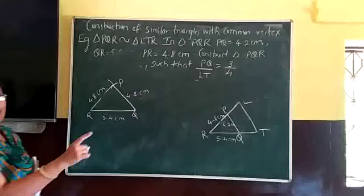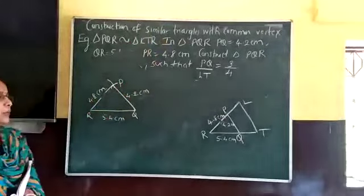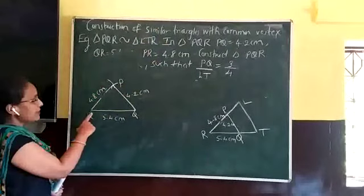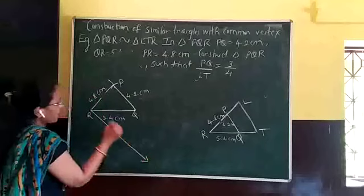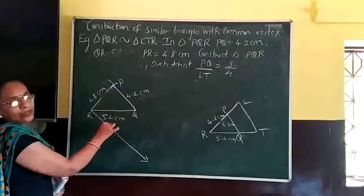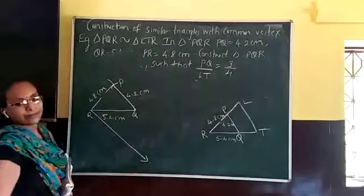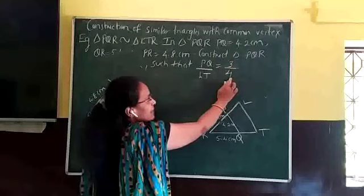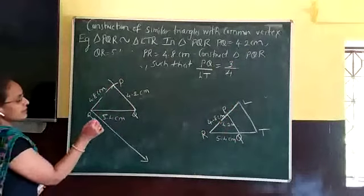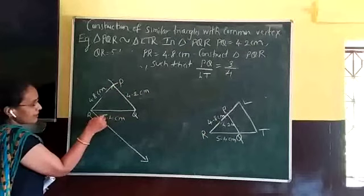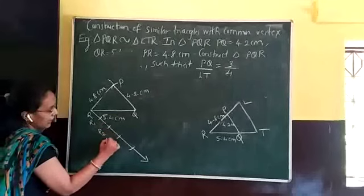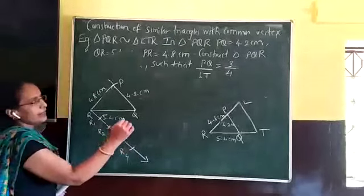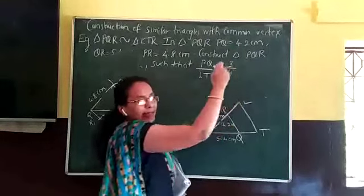After constructing triangle PQR, we are supposed to start constructing the second triangle. R is the common vertex in both the triangles. So from R, with the help of your protractor, take any acute angle — preferably less than 90 degrees — and draw a ray. After that, from the ratio 3 and 4, the greater number is 4. So take a convenient distance with the help of your compass and mark 4 equidistant points along that ray.